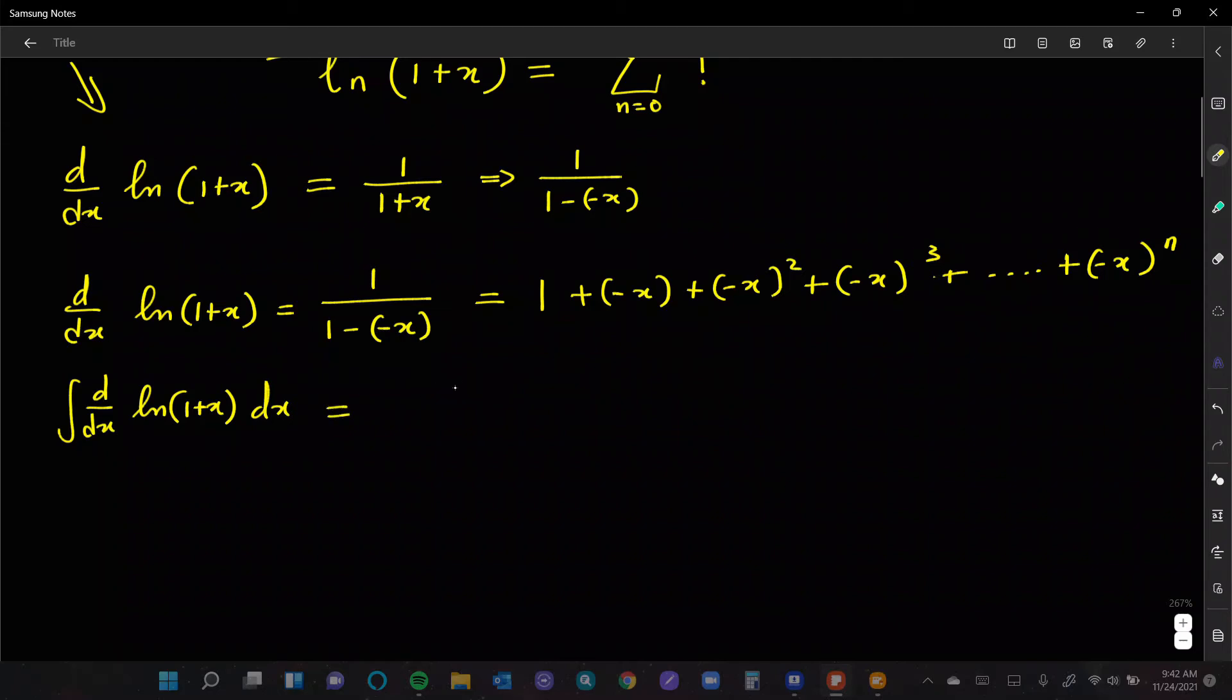And that's going to give us the derivative of the right-hand side here. So I'm just going to skip the middle portion. We're going to have this one gives us minus x, this gives us plus x squared, this gives us minus x cubed, plus dot dot dot.